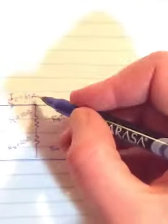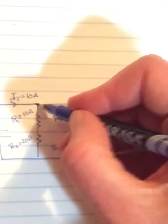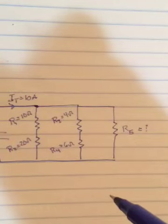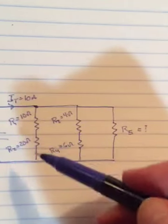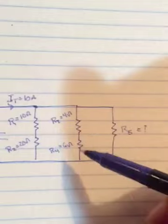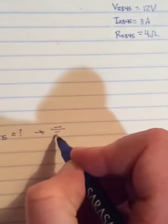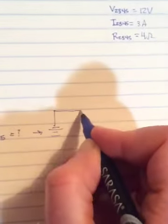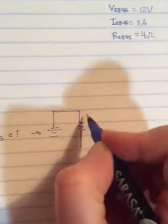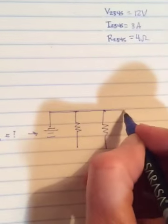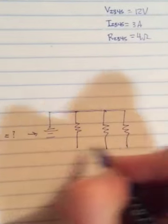But first, how are we going to simplify it? Well, the total current comes from the battery, and it splits. So these three branches are in parallel with each other. But in this first branch, one and two are in series, and in the second branch, three and four are in series. So we could put those together separately, one and two, and then three and four. So the first branch would have R12, the second branch would have R34, and the third branch will just have R5.